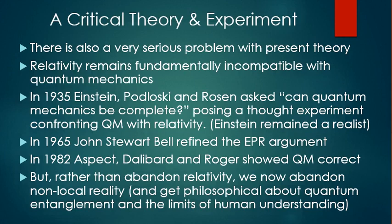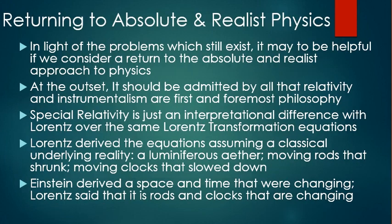There is also a very serious problem with present theory: relativity remains fundamentally incompatible with quantum mechanics. In 1935, Einstein, Podolsky, and Rosen asked, can quantum mechanics be considered complete? — posing a thought experiment confronting quantum mechanics with relativity, as Einstein remained a realist. In 1965, John Stuart Bell refined the EPR argument, and in 1982, Aspect, Dalibard, and Roger showed that quantum mechanics was correct. But rather than abandon relativity, we now abandon non-local reality, whatever that means, and we get philosophical about quantum entanglement and the limits of human understanding.